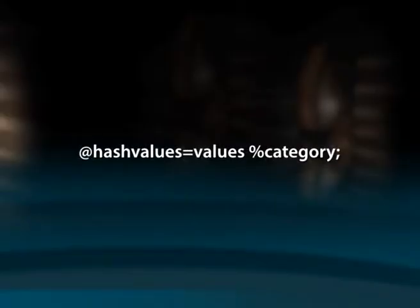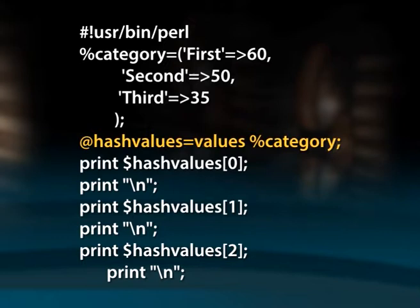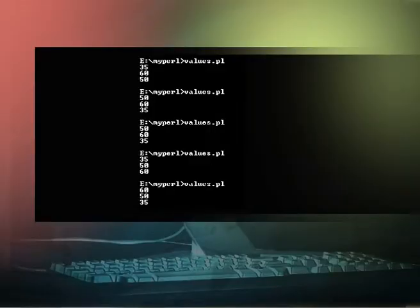Similarly, the values function can be used to get a list of all the values. The syntax is: @hash_values = values(%category). It returns a normal array of all the values of the named hash. An example: %category = (first => 60, second => 50, third => 35). @hash_values = values(%category). Print $hash_values[0], $hash_values[1], $hash_values[2]. Each statement is similar to the previous example, but instead of storing the keys in the array, here the values of the hash are stored in the array named @hash_values.